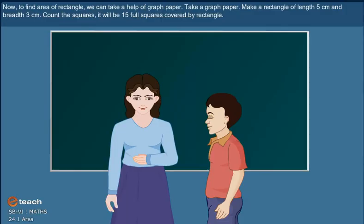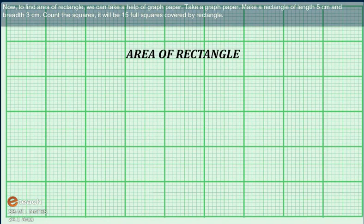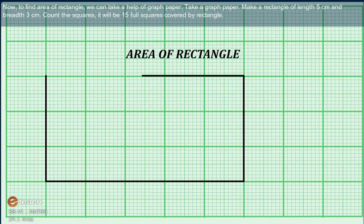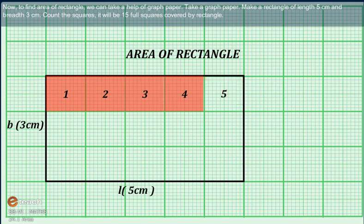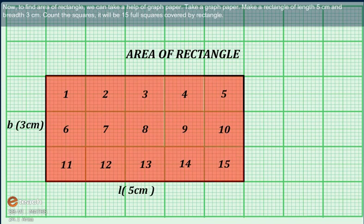Now, to find an area of rectangle, we can take help of graph paper. Take a graph paper and make a rectangle of length 5 cm and breadth 3 cm. Count the squares. It will be 15 full squares covered by rectangle.